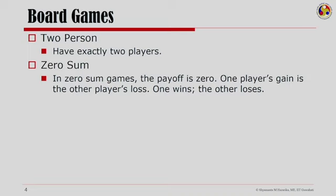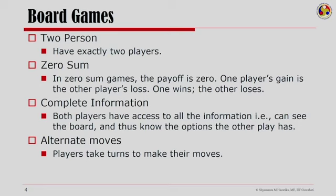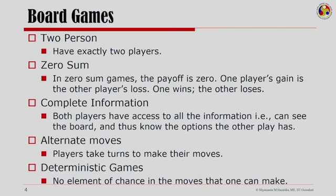So it is like A's gain is B's loss if A and B are playing a zero-sum game. We are talking of complete information games. Complete information games are those in which both players have access to all the information — they can see the board and thus know the options that the other player has. The other important characteristic is that we are talking of games which are alternate moves, meaning the 2 players take turns to make their moves. And finally, we are talking of deterministic games.